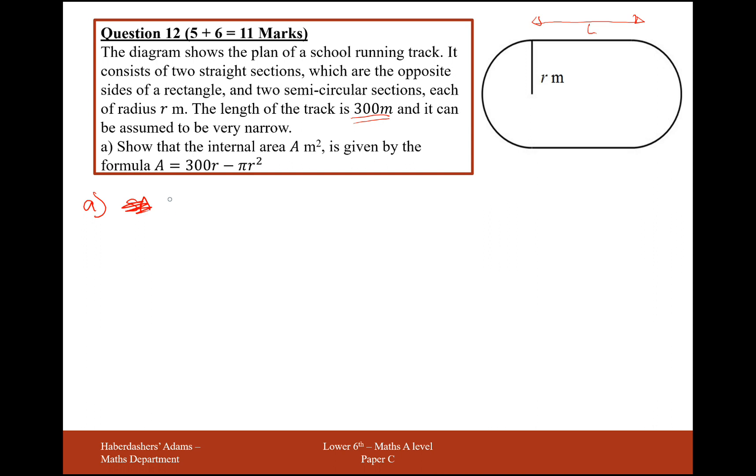The first problem here is going to be the total perimeter of the shape. So it's usually surface area when it's three dimensions, but in this case it's just two dimensions. So the perimeter of this shape here is going to be the perimeter of the circle, which is 2πr, add on two lengths of the running track there, so 2L. And this is going to equal 300.